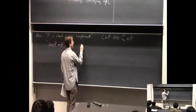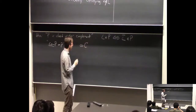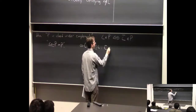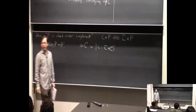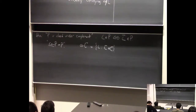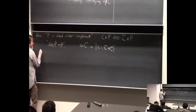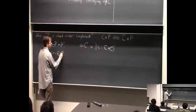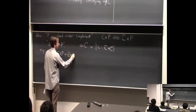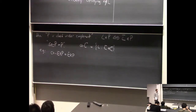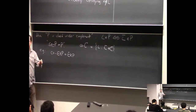In general, if C is any complexity class, co-C means all the languages L such that the complement of L is in C. You never hear people talk about co-P because it's just the same as P. Similarly, co-EXP equals EXP: if you can solve a problem in exponential time, you can also solve the negation of that problem just by reversing yes or no, also in exponential time.